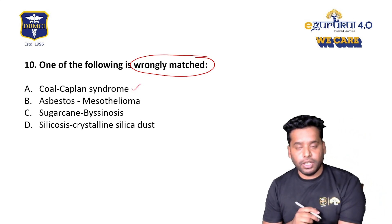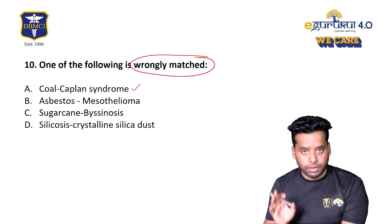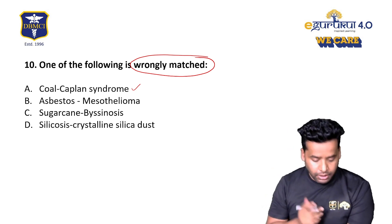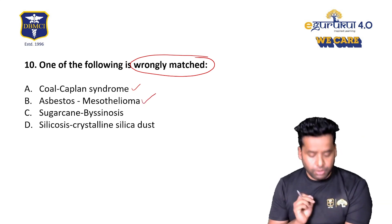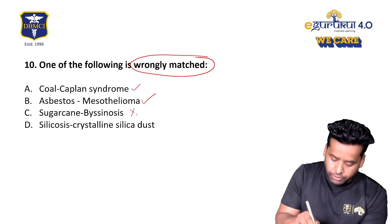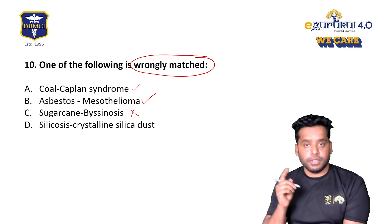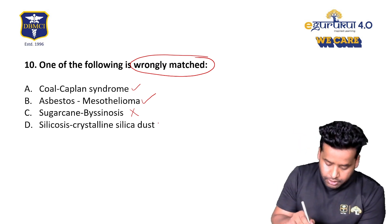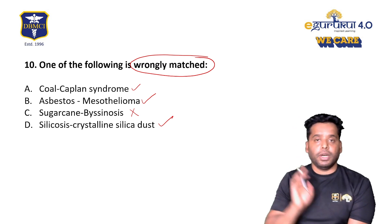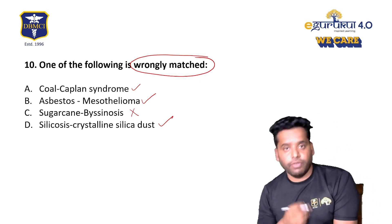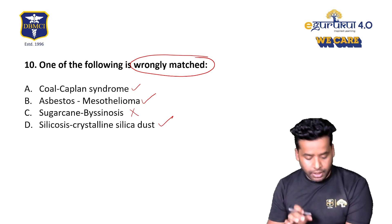Which of the following is wrongly matched related to pneumoconiosis? Coal exposure leads to Caplan syndrome — a combination of arthritis and coal anthracosis. Asbestos is responsible for mesothelioma, the most dangerous pneumoconiosis. Sugarcane waste causing 'bacinosis' is wrong — sugarcane bagasse causes bagassosis. Silicosis is caused by crystalline silica dust; mica miners are commonly affected, and silicosis is the most common pneumoconiosis in India. Option C is wrong.